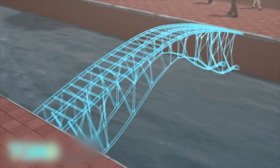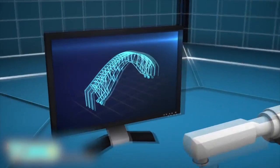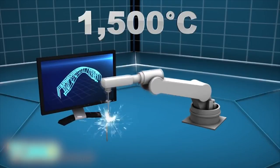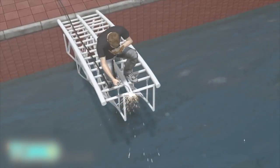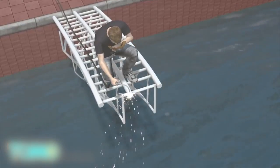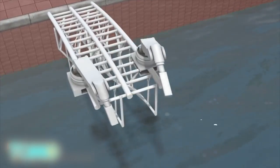The computer program plots designs while robotic arms heat metal to 1,500 degrees Celsius, around 2,700 degrees Fahrenheit, to weld structures drop by drop. This technique removes the need for scaffolding and people at the site.